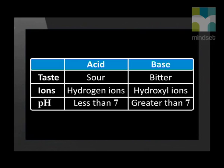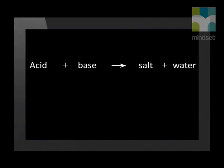The pH of acids is less than 7, while the pH of bases is greater than 7. When an acid and a base react, a salt and water are formed. Let's look at an example of this.